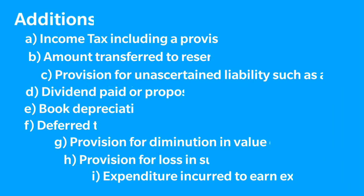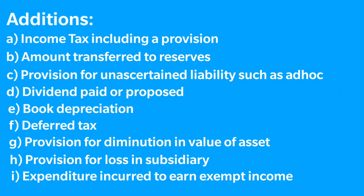The additions include additions by way of income tax including a provision for income tax, any amount which is transferred to reserves, any provision made for unascertained liabilities such as a provision made for warranty on an ad hoc basis or provision made for leave encashment on an ad hoc basis. We also add back dividend which is paid or proposed, the book depreciation, and deferred tax in case deferred tax is debited to the profit and loss account.